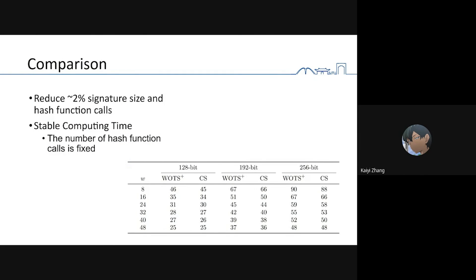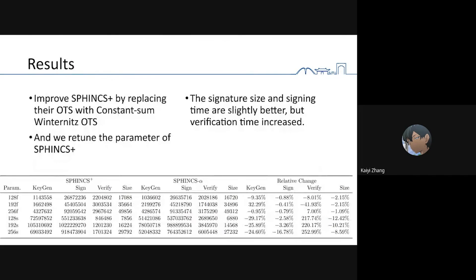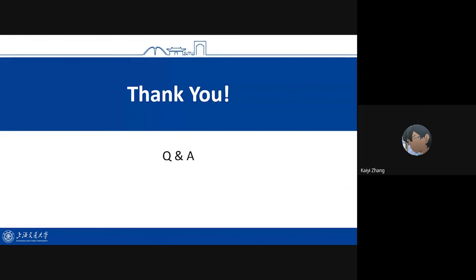Overall, we can reduce roughly two percent the signature size and hash function cost. Our constant sum encoding has stable computing time. It means the number of hash function costs is fixed. We replace the one-time signature in SPHINCS+ with our constant sum one-time signature and return the parameter of SPHINCS+. The result is the signature size and sign time are slightly better, but the verification time increased. Thank you.